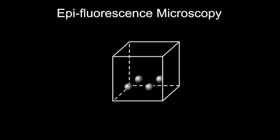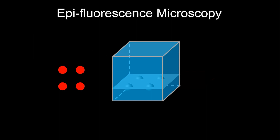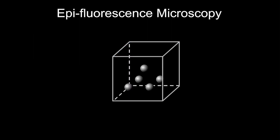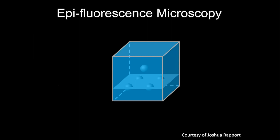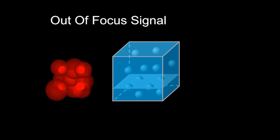Epifluorescence works great when all your fluorophores are in a flat single plane — four fluorophores close to the coverslip give you nice, sharp, crisp spots. But most biological samples don't behave like this. You often have fluorophores outside the focal plane, and when you focus on your plane of interest you get light from those out-of-focus fluorophores, creating a haze in your final image.